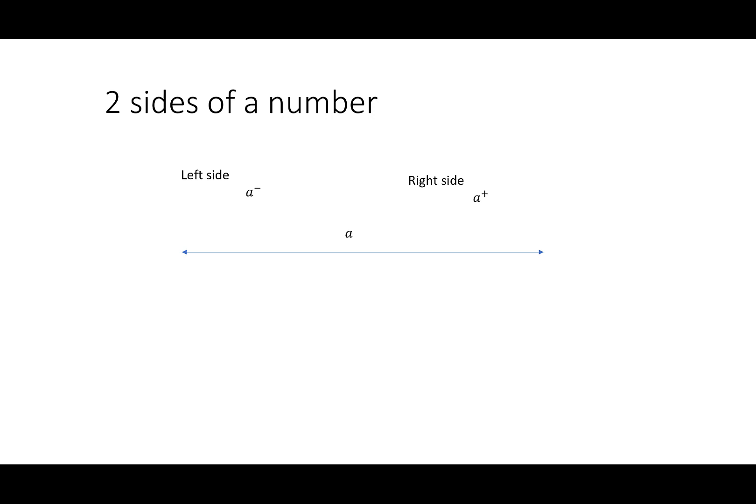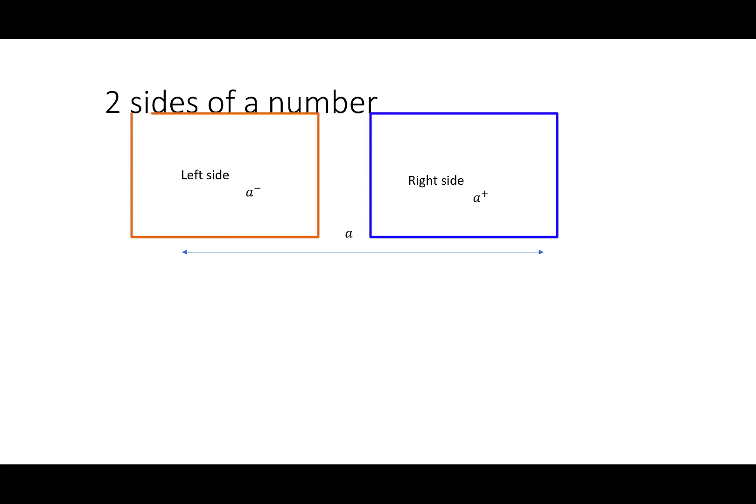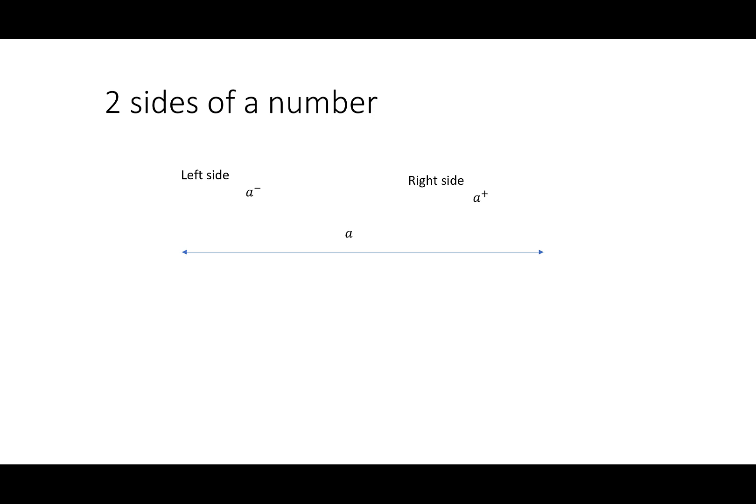For notation and to make things easier, we use a with a plus to mean the right side of a, and we use a with a minus to say the left side of a. And what we want to do is look at what the function's doing on each side of a particular number.